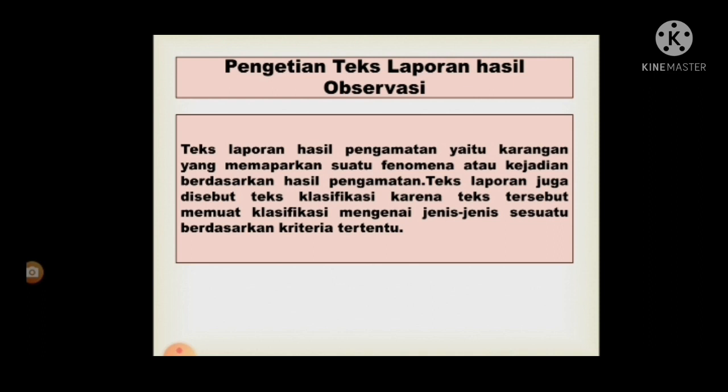Pernyataan umum atau klasifikasi adalah bagian yang berada pada paling awal teks laporan hasil observasi yang menjelaskan mengenai objek yang telah diamati. Selain itu, dibahas juga mengenai penggolongan atau klasifikasi terhadap objek, antara persamaan dan perbedaan, sehingga dapat dibedakan mengenai penggolongan antara satu dengan yang lainnya. Pada bagian ini bisa disebut dengan pengantar atau pembukaan mengenai objek yang diteliti atau dilaporkan, seperti benda, tumbuhan, lingkungan, organisme, fenomena sosial, fenomena alam, dan lain sebagainya.